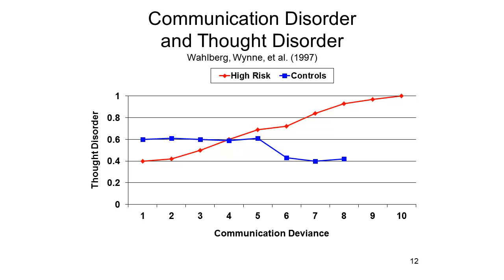But the high level of thought disorder in these adoptees appears to actually contribute to an increase in communication deviance within the family. So the family environment has an effect on the high risk child, but the high risk child also has an effect on the family environment. We see a nice example of reciprocal determinism here.